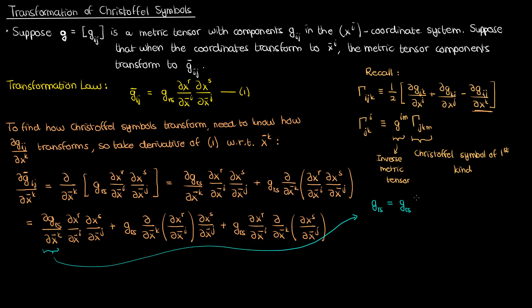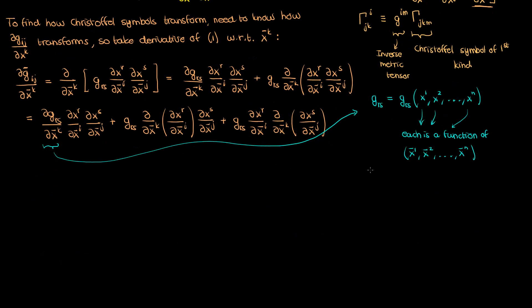The way to do that is to think of g sub rs as a function of the unbarred coordinates x super 1, x super 2, all the way to x super n, with each of these unbarred coordinates being themselves functions of the barred coordinates, one of which includes x super k bar. This is the inverse transformation — going from the barred coordinates to the unbarred coordinates which g sub rs is a function of. So if I want to find the partial of g sub rs with respect to x super k bar, I can use the chain rule.